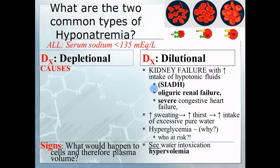With dilutional hyponatremia you see hypervolemia — too much water. With depletional hyponatremia there's usually less water too, so you see hypovolemic symptoms. If you have less salt in the blood and more water, it's a hypotonic situation: water moves from the blood into the cells, losing blood volume.